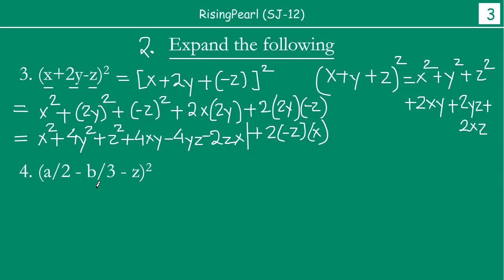Now let us look at the next example. Here you notice again three terms — let us call them 1, a, b, and c instead of z. Interestingly, the coefficients of these terms are fractions: a/2, b/3, and so on. So does this require something different, or can we still use the same identity 5 formula? The answer is yes, we can still use the same formula.